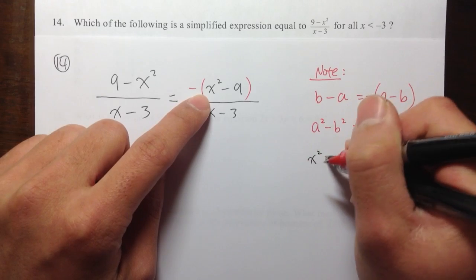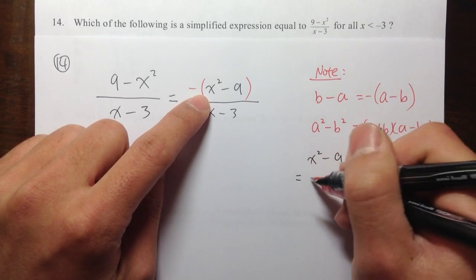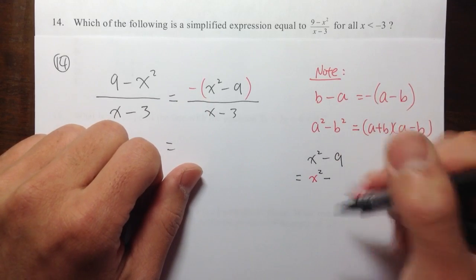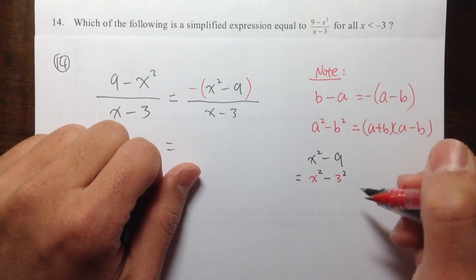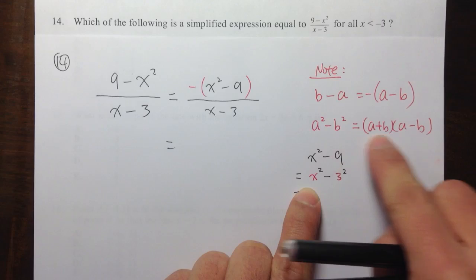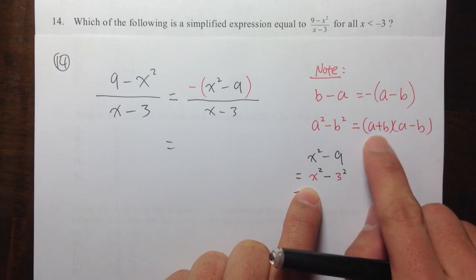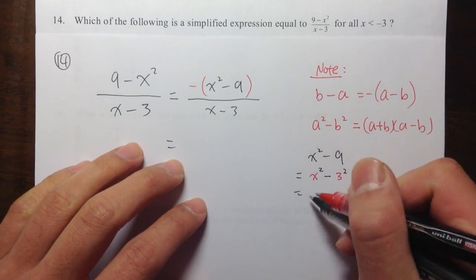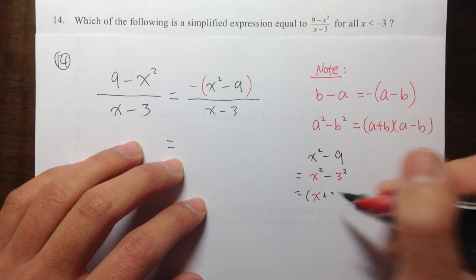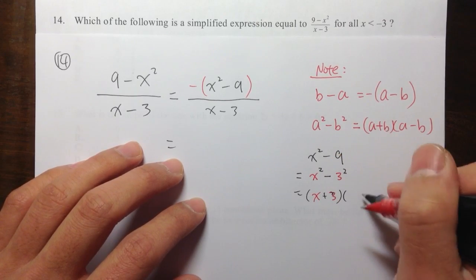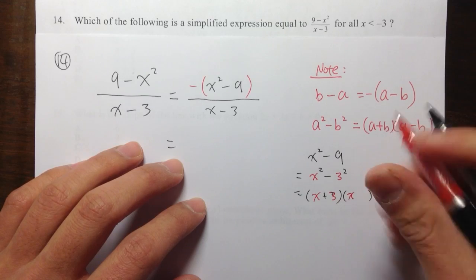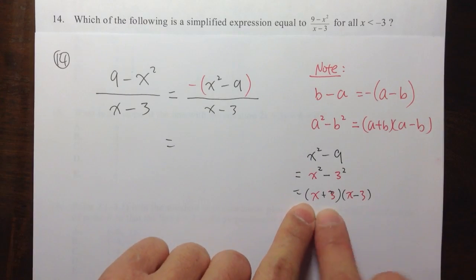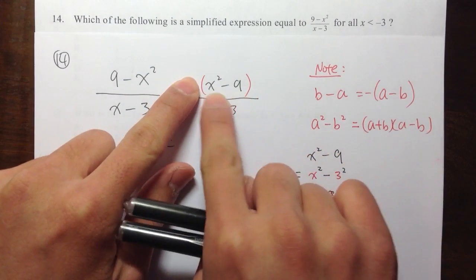If you have x squared minus 9, I can write 9 as 3 squared. This right here is exactly in this form. So I can just do the first plus the second times the first minus the second. This is equal to x plus 3 times x minus 3. So this is how we're going to factor this parenthesis right here, x squared minus 9.